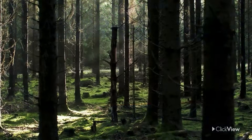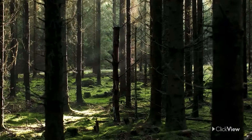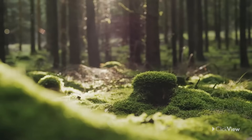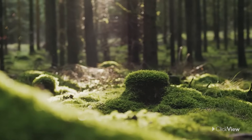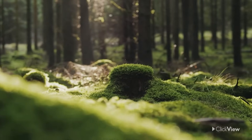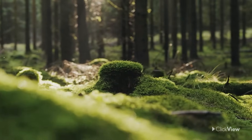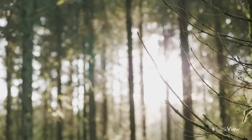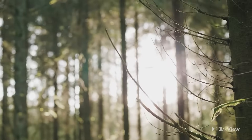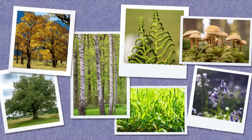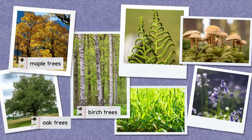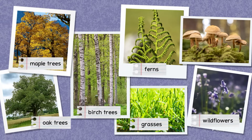A woodland is an area of land with a number of trees. It can be small or large. The trees do not grow very close together, so there are lots of open spaces and sunlight. Plants that grow in European woodlands include trees such as the oak, birch, and maple, and ferns, wildflowers, grasses, and fungi.